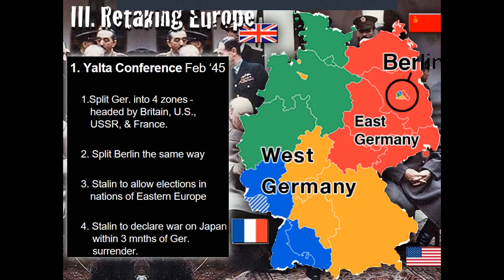Stalin would also get the Baltic States, and Britain was going to retake its Asian colonies. The U.S. would keep the Pacific Islands. Remember, the British had control of Hong Kong, and when the Japanese rolled in they took over. Stalin promised to allow elections in the nations of Eastern Europe that his army had liberated from the Germans, but in the end, Stalin never did allow free elections in Europe.